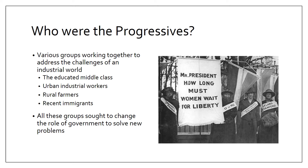Another group that got involved were urban industrial workers — the factory workers — who continued to organize unions and also started to vote for progressive candidates. Rural farmers, who we talked about with the populist movement, realized that progressives stood for much of the same things as populism, so they got on board too. Recent immigrants also came in with lots of progressive ideas, since socialism was a powerful force in Europe and they already had strong ideas about how government should work to improve people's lives.